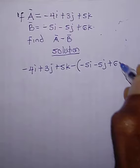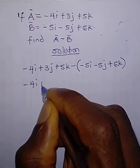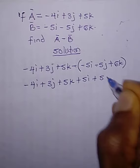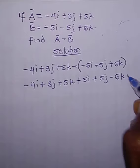Next, you open the brackets. I have minus 4i plus 3j plus 5k — minus times minus gives plus 5i, minus times minus gives plus 5j, minus times plus gives minus 6k.